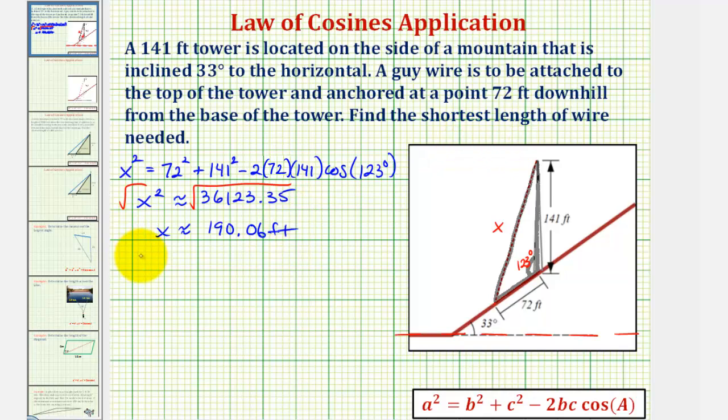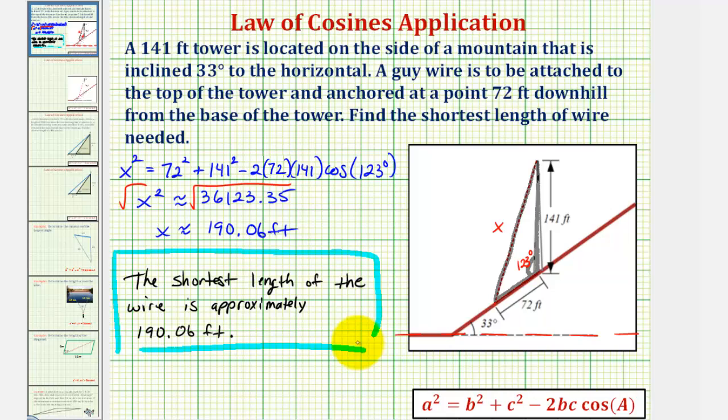So we can say the shortest length of the wire is approximately 190 and six-hundredths, or point zero-six feet. I hope you found this helpful.